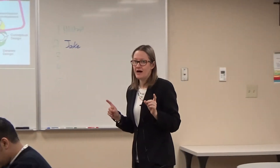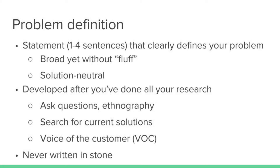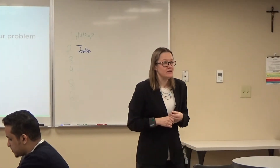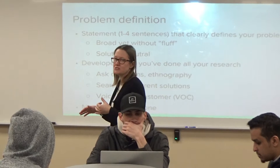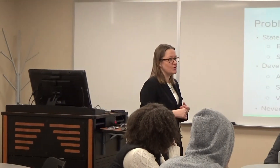We'll start with problem definition — the problem identification and specification development phase. Here you define your problem with a one-to-four sentence statement clearly defining your problem with details. We gave you a very broad statement; you work on defining that problem in your own words, narrowing down or defining the scope. It should still be fairly broad, but without fluff, and it must be solution-neutral — we do not think about solutions at all during this define phase. It's best done after you've completed all your research: ask questions, ethnographic research, patent searching for current solutions, interviews, listening to the voice of your customer. And it's never written in stone.